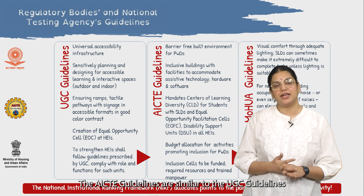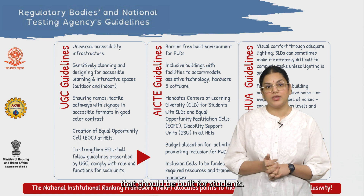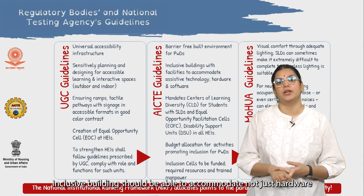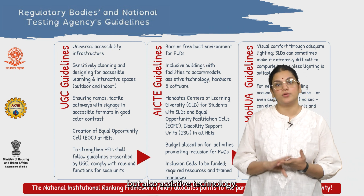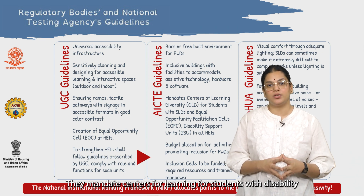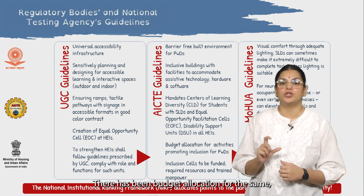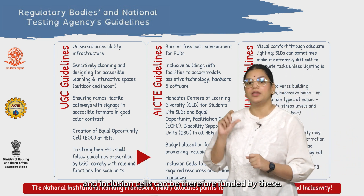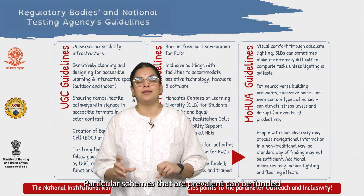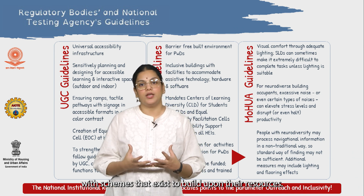The AICTE guidelines are similar to the UGC guidelines and talk about a barrier-free environment that should be built for students. Inclusive buildings should accommodate not just hardware but also assistive technology. They mandate centers for learning for students with disability and equal opportunity cells, with budget allocation for the same. Inclusion cells can therefore be funded by prevalent schemes that exist to build up their resources.